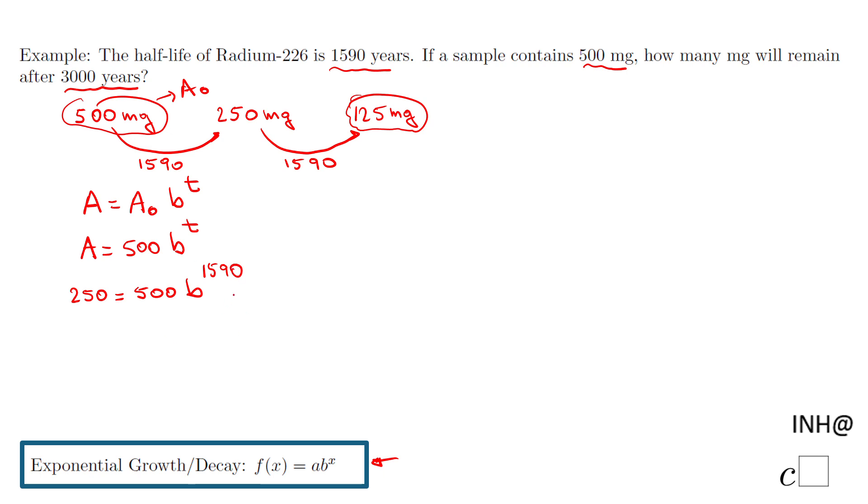What I did here is a model for half-life, and that will allow us with this equation to get the b. Of course we're going to divide by 500. No surprise here, I think we're going to get 1 over 2 or 0.5 equals b to the power of 1590.